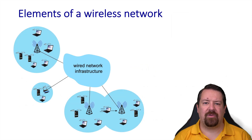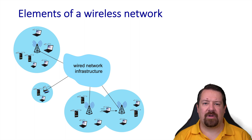First, let's look at an overview of the elements of a wireless network. In general, a wireless network is an extension of a core wired network. So the wireless links are part of the access network, but the core of the network is still the wired core of the internet that we've been discussing throughout the class.